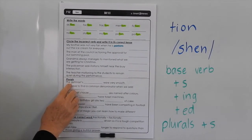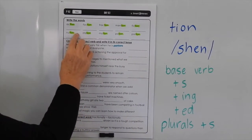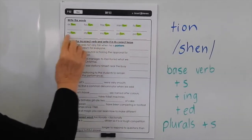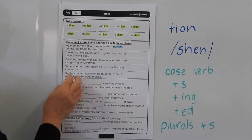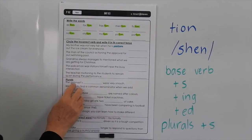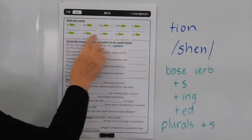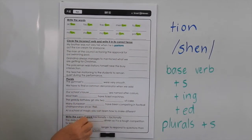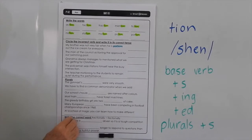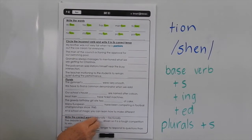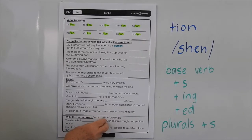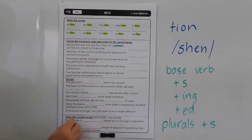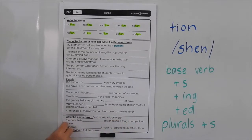Now down here you've got plurals. When you're adding an S to all these words, you're forming the plural — there's no tricks in there for you. 'The gymnast something was very smooth' — you can work out which word best suits that space. Down the bottom you have to write the correct word. Now these are both adverbs — they're describing the verb. So we've got 'fractionally' and 'factionally'. The debate is something driven, so it's a tough competition to win. You have to work out which word goes in each space.